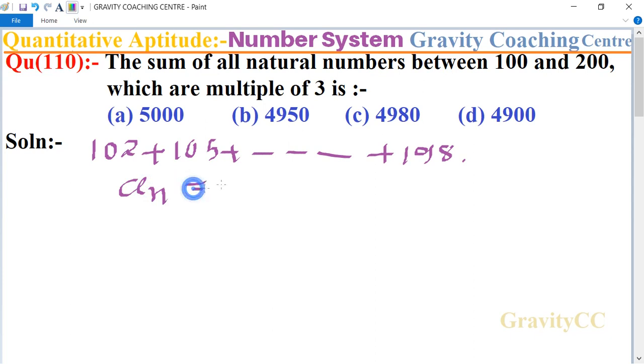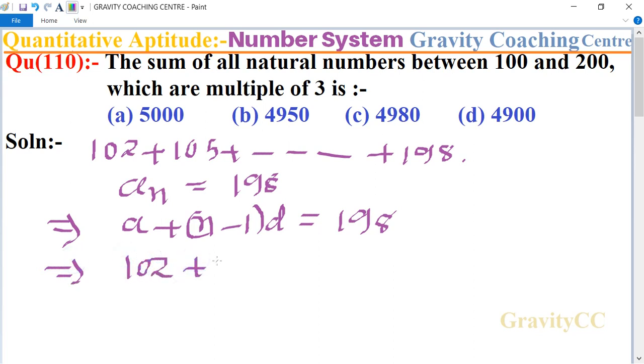The formula of a_n is a plus (n minus 1) times d, equal to 198. Here a equals 102 plus (n minus 1), and common difference is 3, equal to 198.